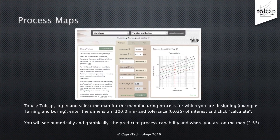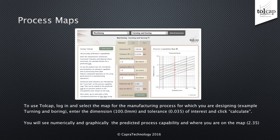To use Tollcap, log in and select the map for the manufacturing process for which you're designing. Let's suppose this is turning and boring, which is in the machining group. Enter the dimension and tolerance of interest — 100mm and ±0.035mm. Do that even if the drawing shows 100mm minus 0 plus 0.07, because Tollcap expects a balanced plus and minus tolerance. Next, click Calculate. You will see, numerically and graphically, a predicted process capability: CPK is 2.35, and where you are on the map.